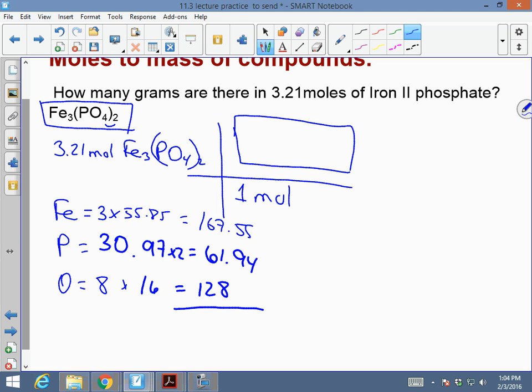The total mass is 357.49 grams. It goes here. 357.49 grams of Fe3(PO4)2.